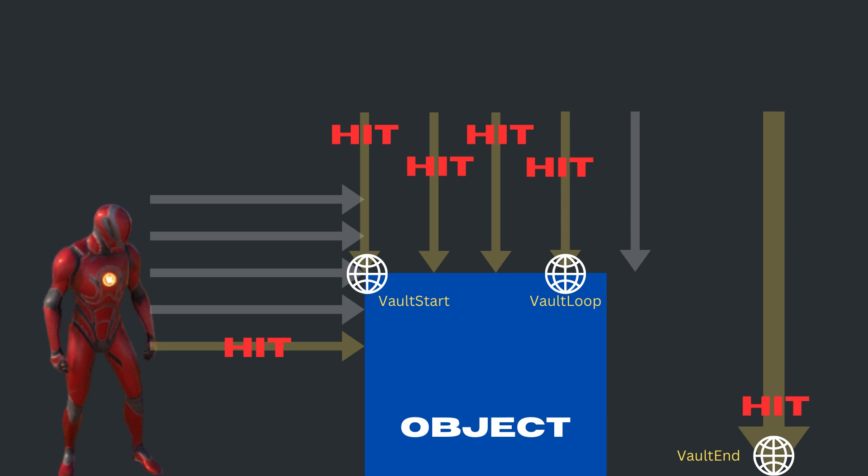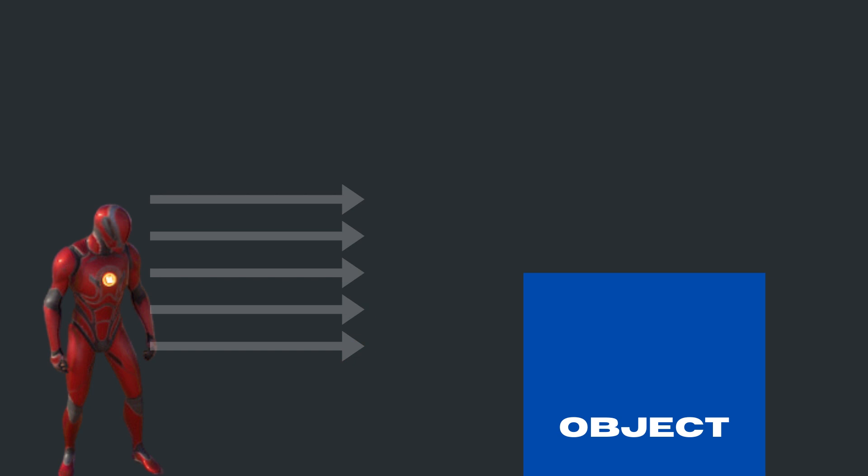Let us plan what we are going to implement in this Vault ability for Lyra. The Motion Warping for the Vault ability works based on three target points. We have to first identify the locations for these three points whenever the Vault ability is triggered. The idea is to send spear traces to detect the objects to vault over.